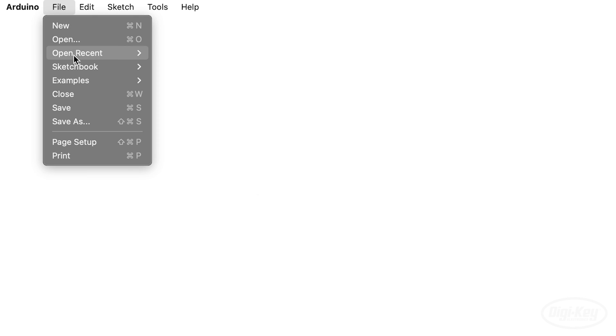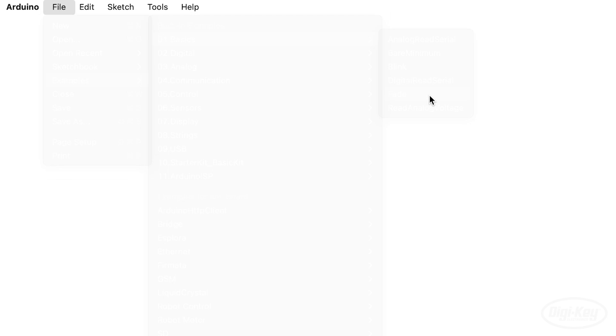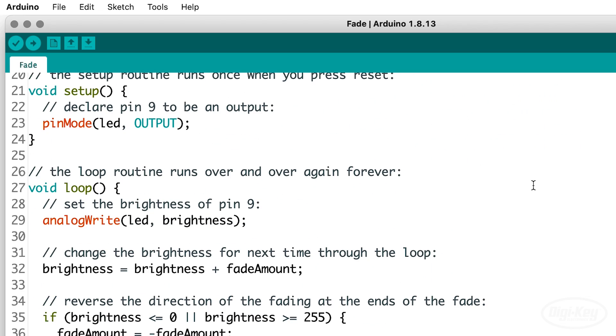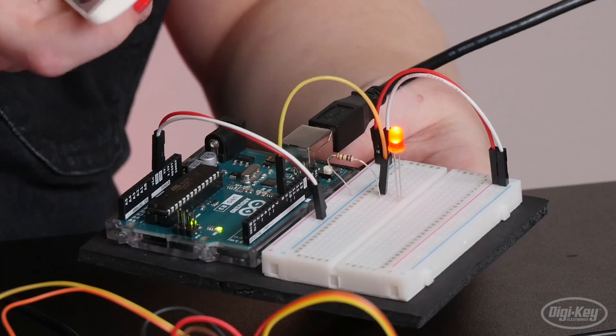Open up the example in your Arduino software under File, Examples, 01 Basics, Fade. Plug in and upload the sketch to your Arduino board, and observe your LED fade on and off.